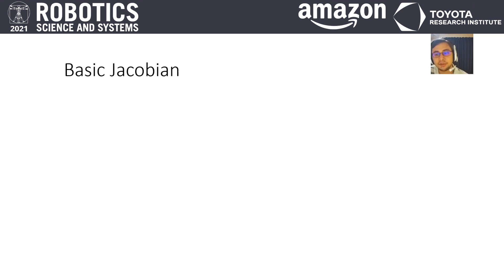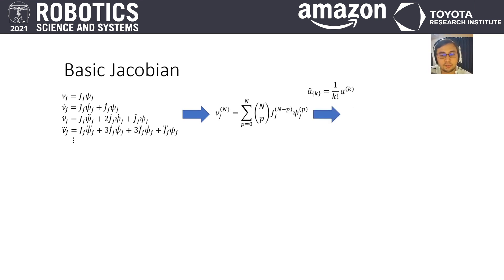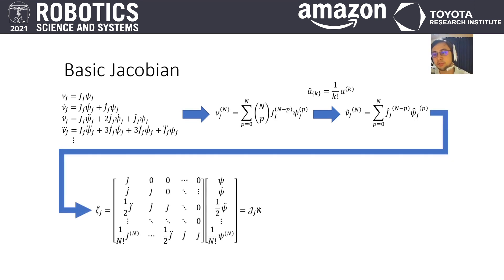Let's now see the relationship with the basic Jacobian and its comprehensive version. We differentiate the well-known equation N times. The N-order motion can be computed using this formulation where the hat notation simplifies the factorials. Transforming the equation into a matrix multiplication, we get the relationship between the basic Jacobian and the comprehensive basic Jacobian.